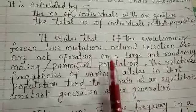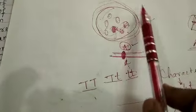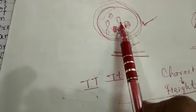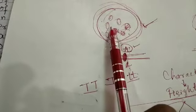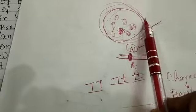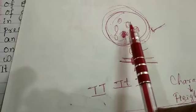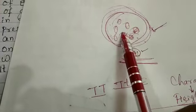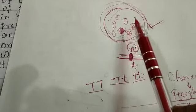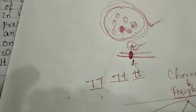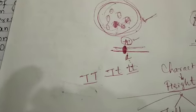To repeat: if on a population the mutation and natural selection-like evolutionary forces are not acting, then whatever alleles are present in that population will remain constant, or remain in equilibrium, generation after generation.